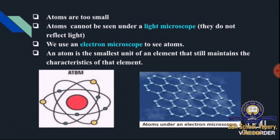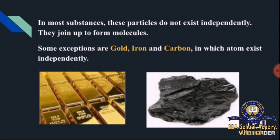Atoms are tiny particles that can only be seen under an electron microscope, and they maintain the characteristics of that element. In most substances, particles do not exist independently — they join up to form molecules. However, in some exceptional cases like gold, iron, and carbon, atoms can exist independently.